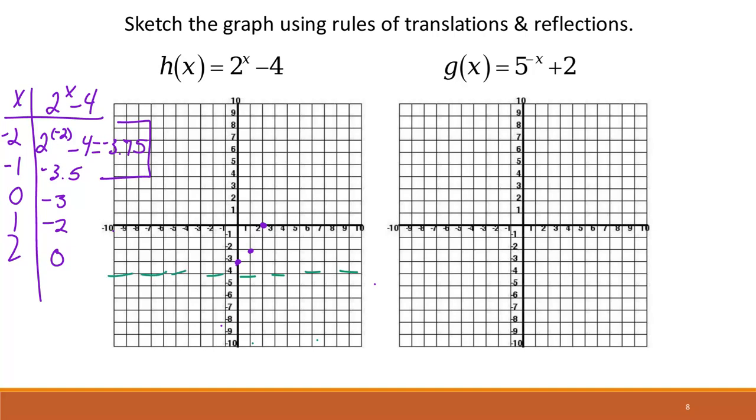And so if we connect this, we know this is going to keep going this way towards that asymptote without touching it. And continue this there.